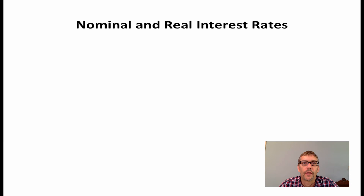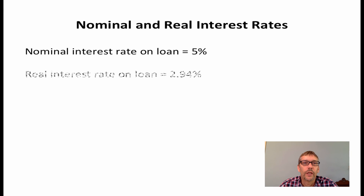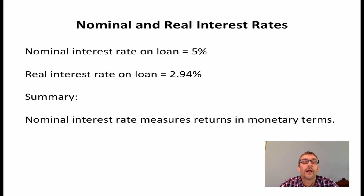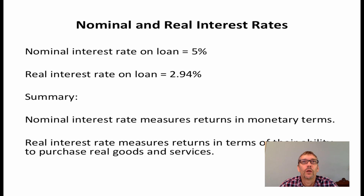So, in our example, the nominal interest rate on the one-year loan is 5%, while the real interest rate on that loan is 2.94%. The key difference between these numbers is the fact that the nominal interest rate measures the return to a loan in purely monetary terms, while the real interest rate indicates the return to a loan in terms of the ability to purchase real goods and services.